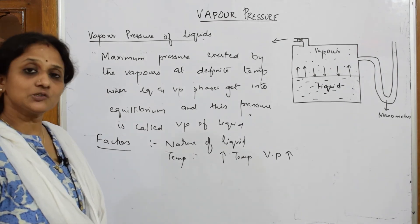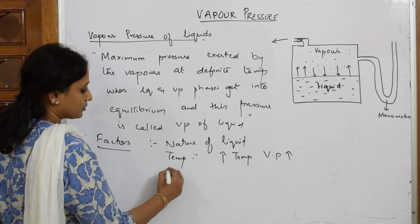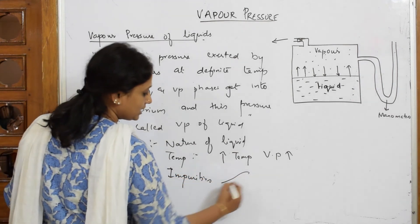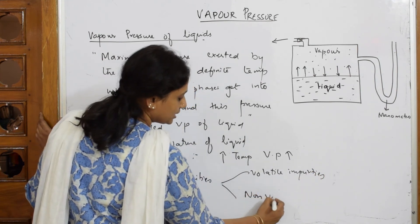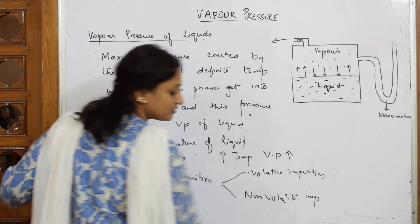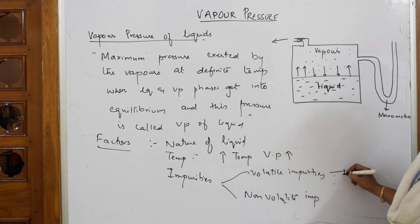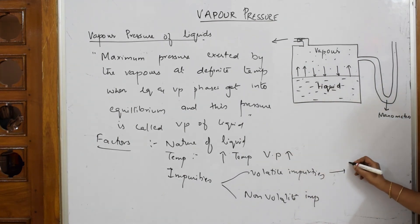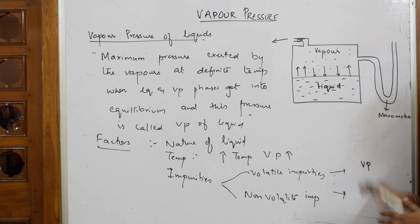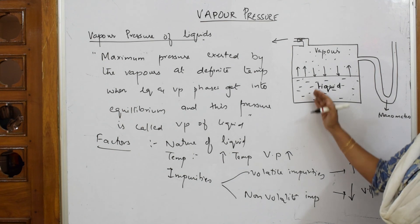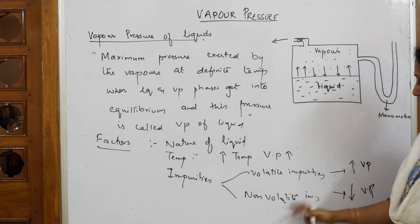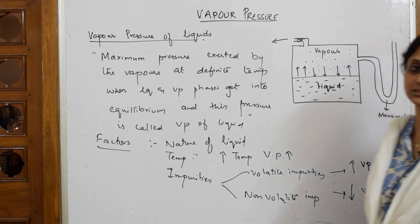Vapor pressure also depends upon impurities — this is very important. In impurities, you have volatile impurities and non-volatile impurities. Volatile means which will evaporate; non-volatile means which will not evaporate. Volatile impurities, when present in the liquid, increase the vapor pressure because they immediately evaporate and go into the vapor state. Non-volatile impurities reduce the vapor pressure because they don't evaporate — they stay and pull the colliding molecules down. So, non-volatile reduces vapor pressure, volatile increases vapor pressure.